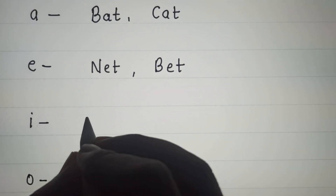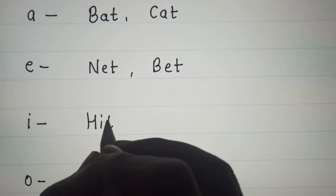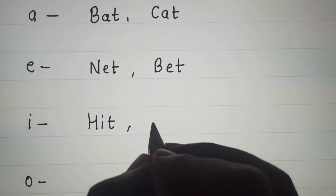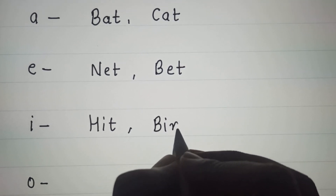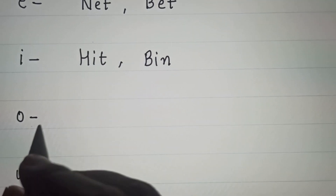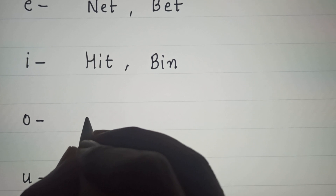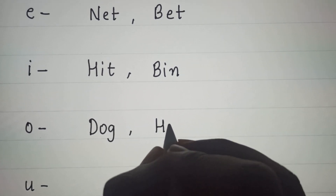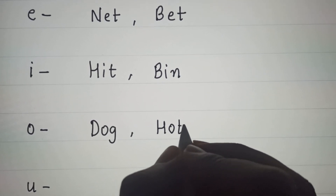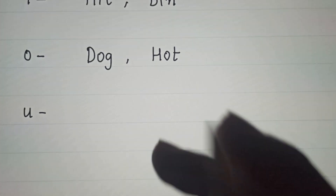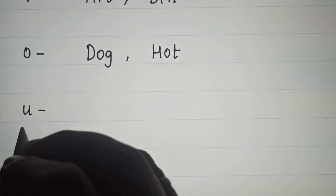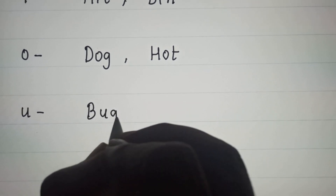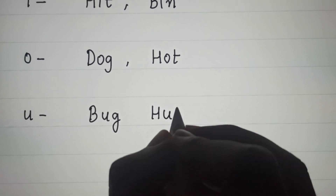The words for sound 'i' are hit and bin. The words for sound 'o' are dog and hot. The words for sound 'u' are bug and hut.